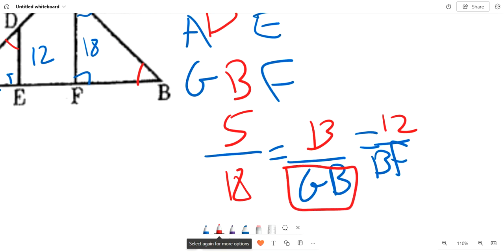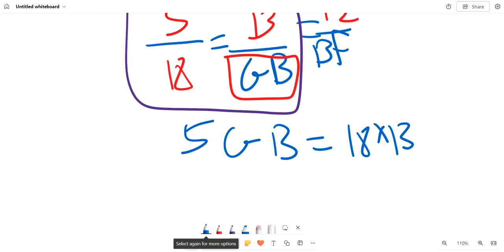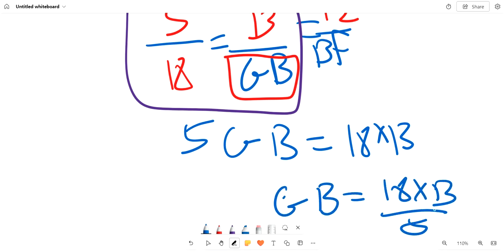We can use just this set. So we know that 5 over 18 equals 13 over GB. So GB equals 18 times 13 over 5.